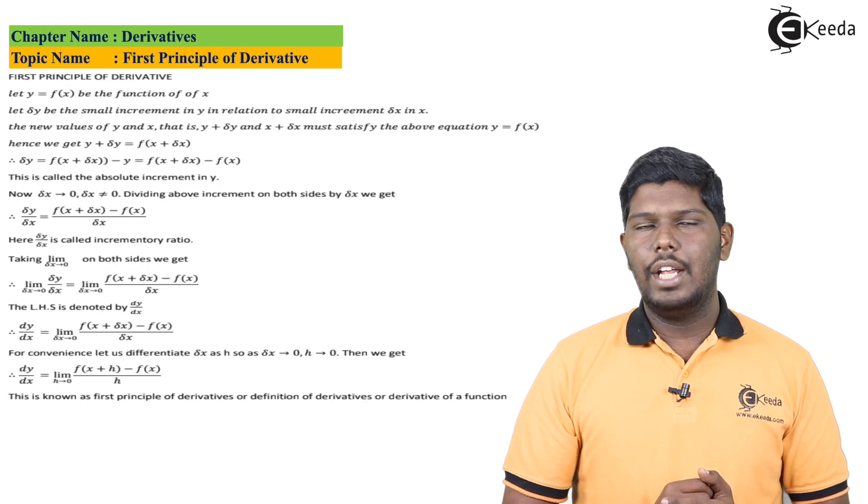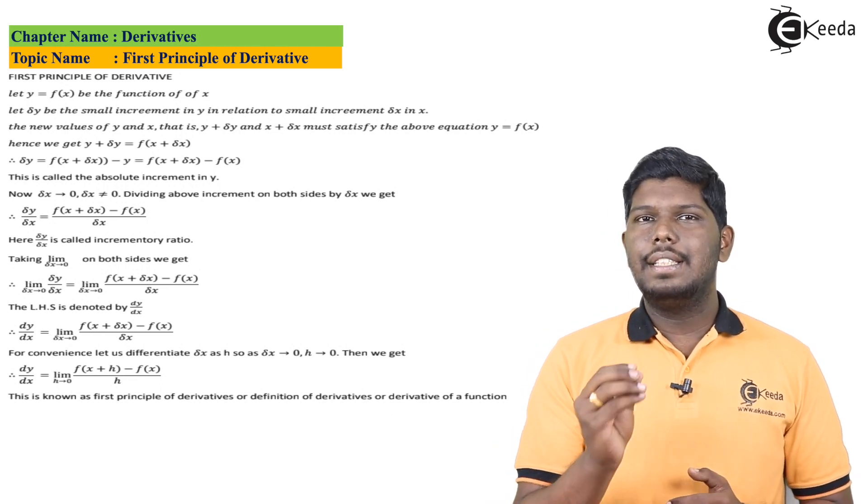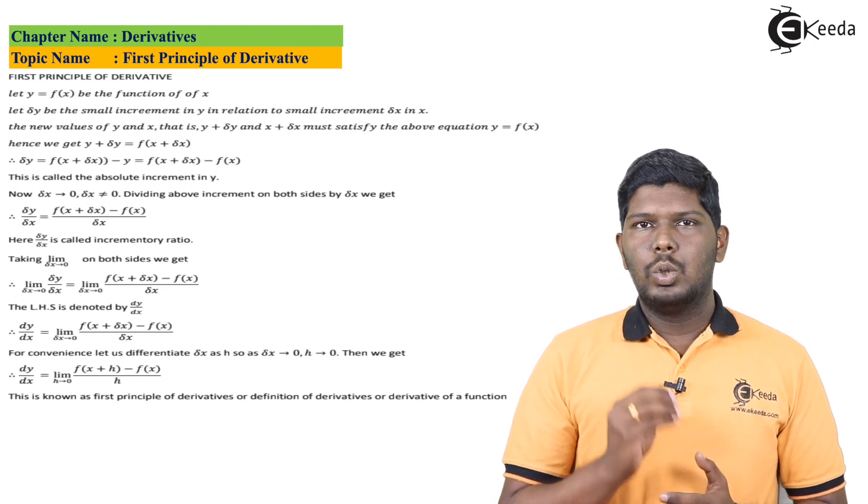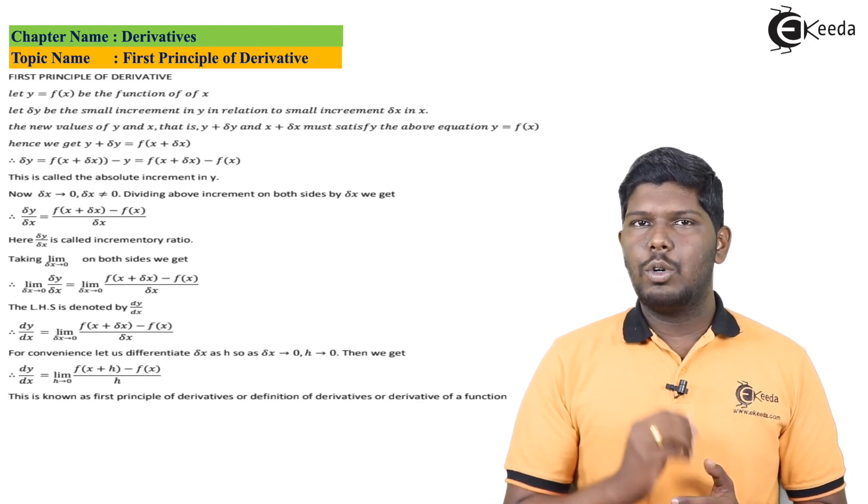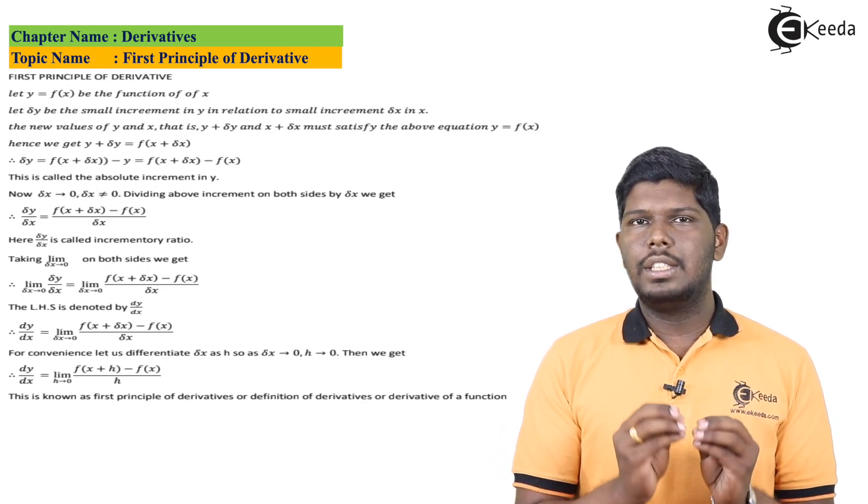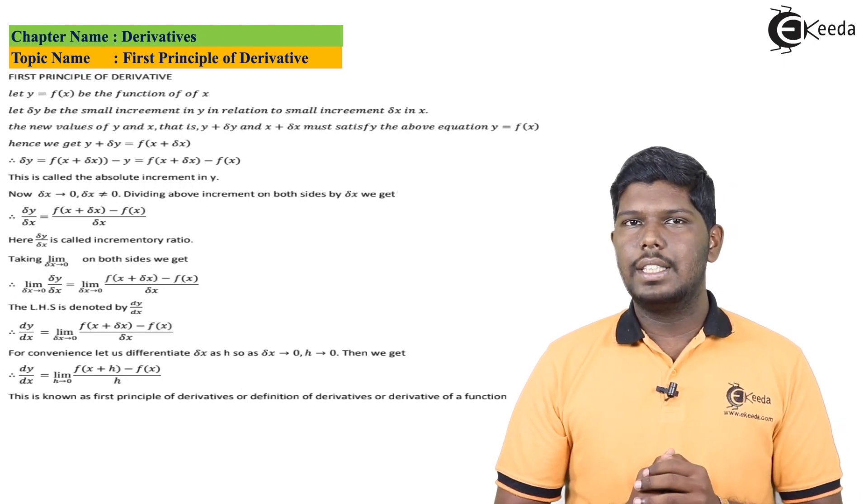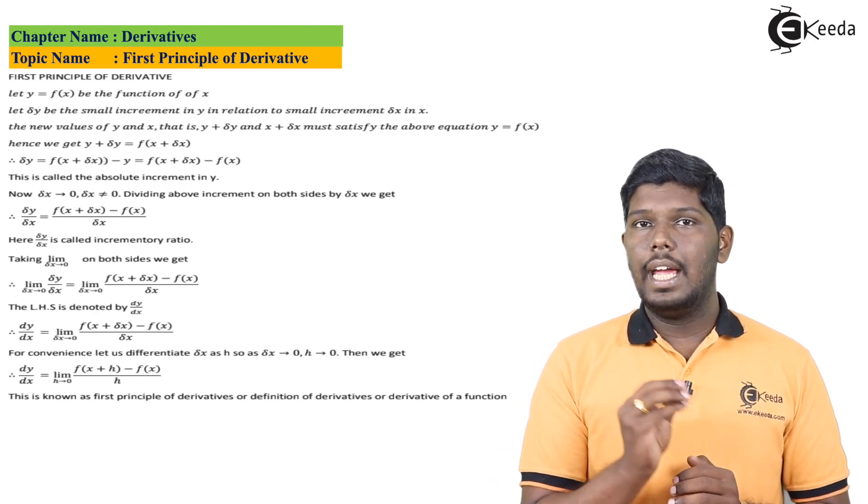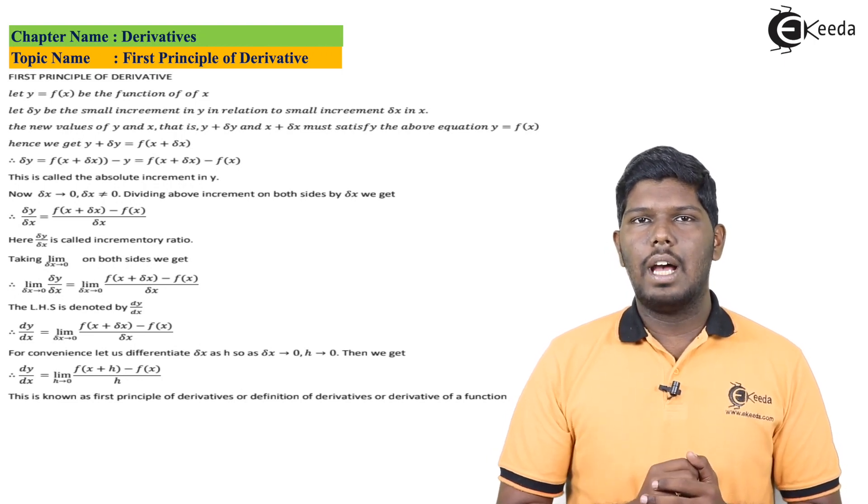Now for our convenience we are taking this del x as h. So if I consider del x as h, first del x was tending to 0, here h will be tending to 0. Generally we are just substituting del x as h. So the formula will be dy by dx equals limit h tending to 0 of f of x plus h minus f of x upon h.